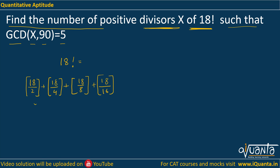We only take the integer part of each bracket. As soon as you go to 18/32 that becomes 0-point-something, so the integer part is 0 and doesn't matter. So we get 9 + 4 + 2 + 1, giving us 2 to the power of 16.